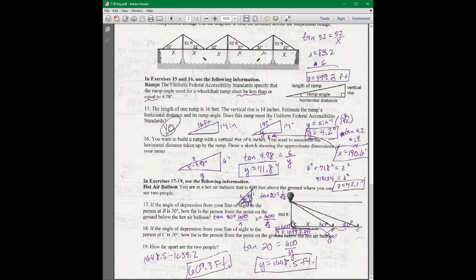I used tan of that angle. And then it says you want to build a ramp with a vertical rise of 6 inches. You want to make sure that the horizontal distance is minimized. So that means you want to use the biggest angle you can, which is 4.78. So put 4.78 in here. They want you to find Y and Z, which I called those. So just use tangent for that. And then I used the Pythagorean theorem to find Z for that one.